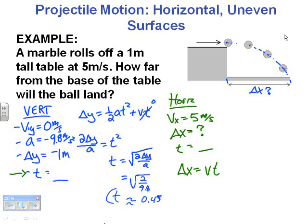But this is great. We've got T. And with T, we can bring that over here to our horizontal information. So, now we know T, 0.45 seconds. So, then we can find delta X.